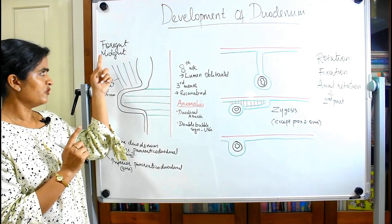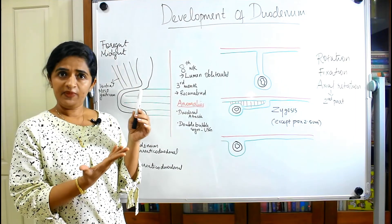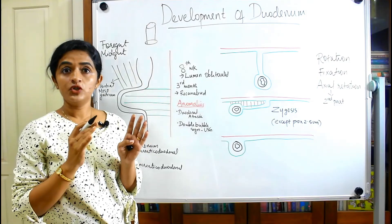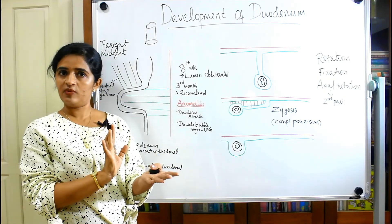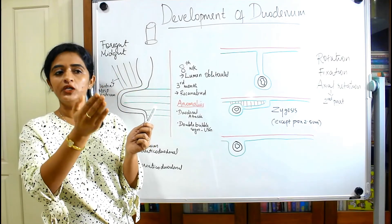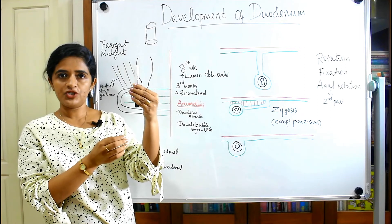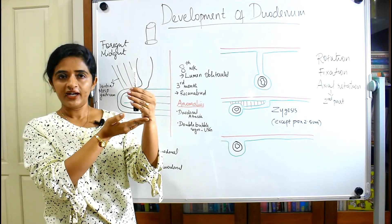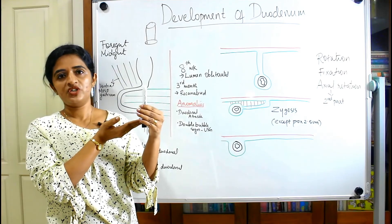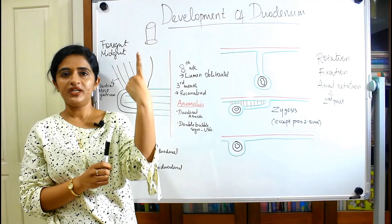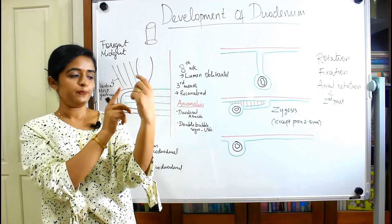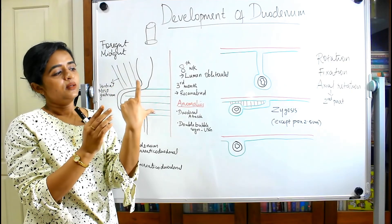In the beginning, the primitive gut tube is in the form of a straight tube. What happens at the duodenal region is that this straight tube will develop a convexity anteriorly, forming a loop anteriorly. Previously it was just a straight tube; now it bends anteriorly so that there is a loop with a convexity facing anteriorly and a concavity facing posteriorly — just imagine a C-shape like this.